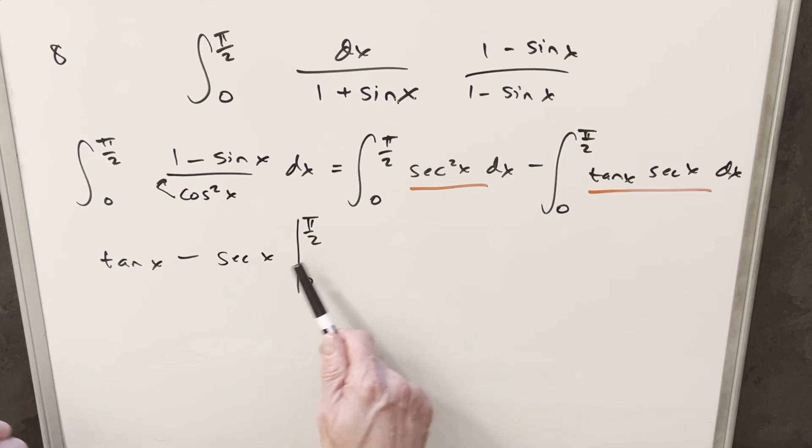And then similarly, secant at pi over 2, that's also going to infinity. So this is a problem here. Anyway, when we evaluate at pi over 2, we're going to have this infinity minus infinity case, which is an indeterminate form.